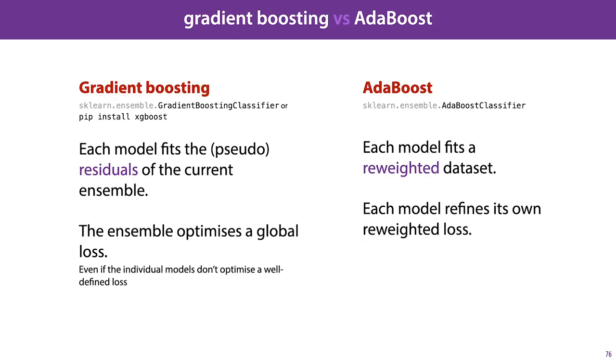So, we've seen two methods of boosting in detail: gradient boosting and AdaBoost. Both are available in sklearn, and gradient boosting in particular is a popular choice to use in combination with regression and decision trees. In gradient boosting, we look at the residuals of the current ensemble and fit the next model in the ensemble to these. Whereas in AdaBoost, we use the output of the current ensemble to re-weight the dataset and train a new model on this re-weighted version of this dataset.